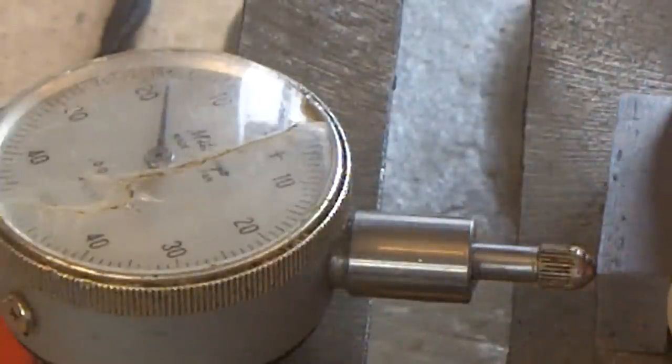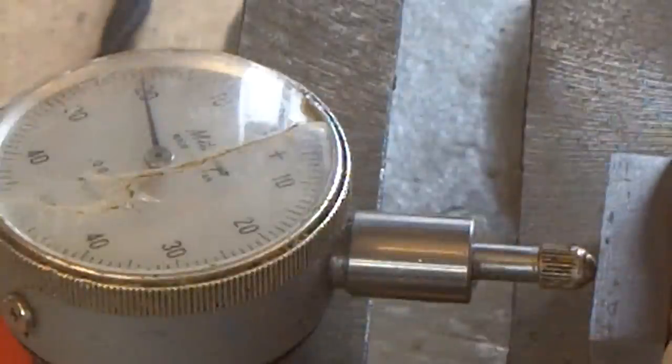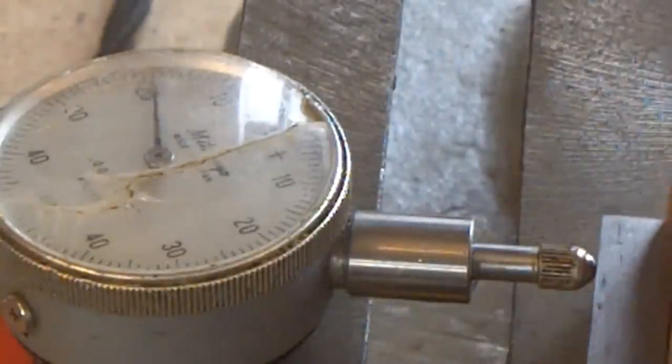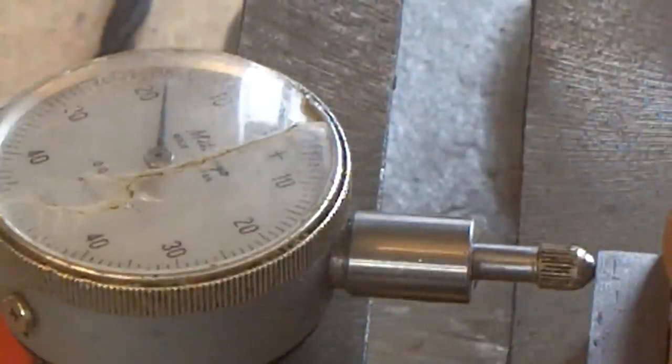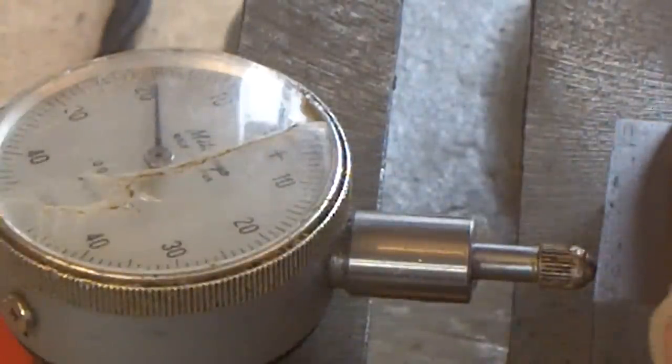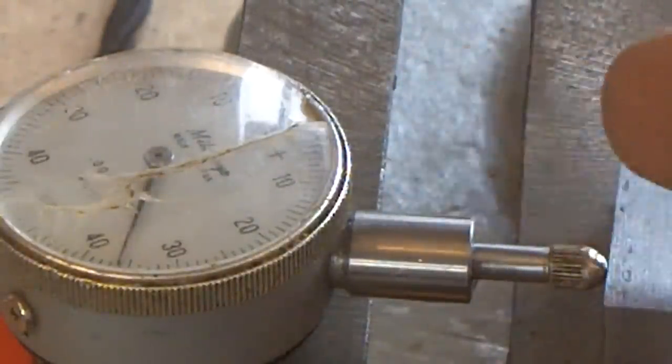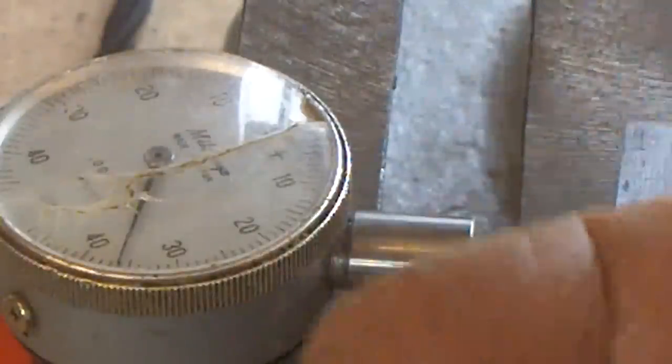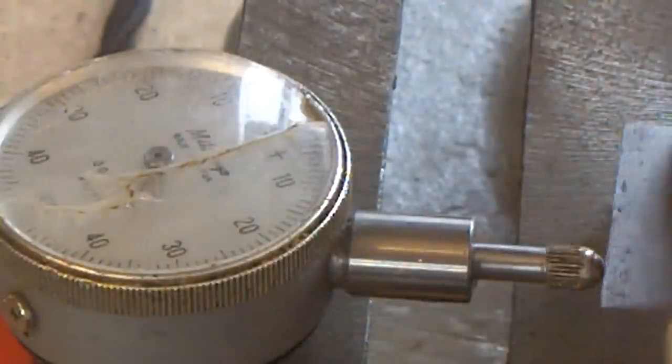And if I go to that end, it's plus three thou. Back to 20 when I'm in the middle. And again, plus three thou on the other side. So there's only three thou of an inch in it. I thought that that swing was much more pronounced.